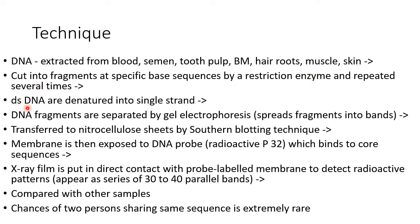The double-stranded DNA is denatured into single strands. These single-stranded DNA fragments are separated by gel electrophoresis, which spreads DNA fragments into bands. These bands are transferred to nitrocellulose sheets by the Southern blotting technique. The nitrocellulose membrane is then exposed to a DNA probe — radioactive phosphorus-32 — which binds to core sequences. The X-ray film is put in direct contact with the probe-labelled membrane to detect radioactive patterns, which appear as a series of 30 to 40 parallel bands. These parallel bands are unique for an individual.